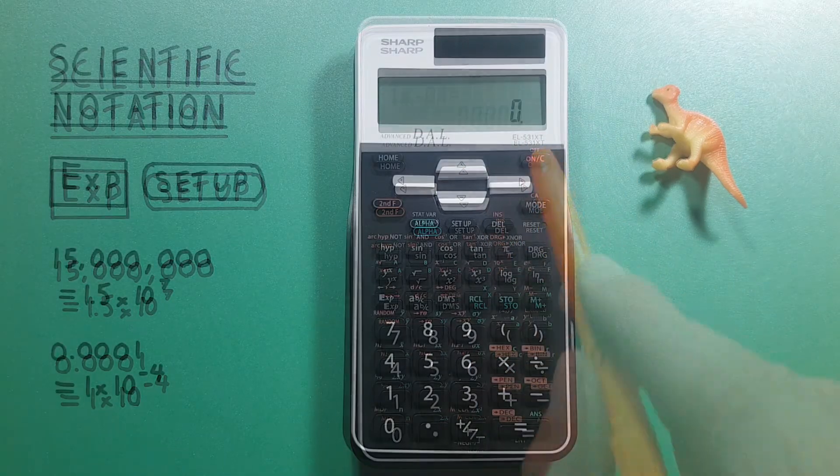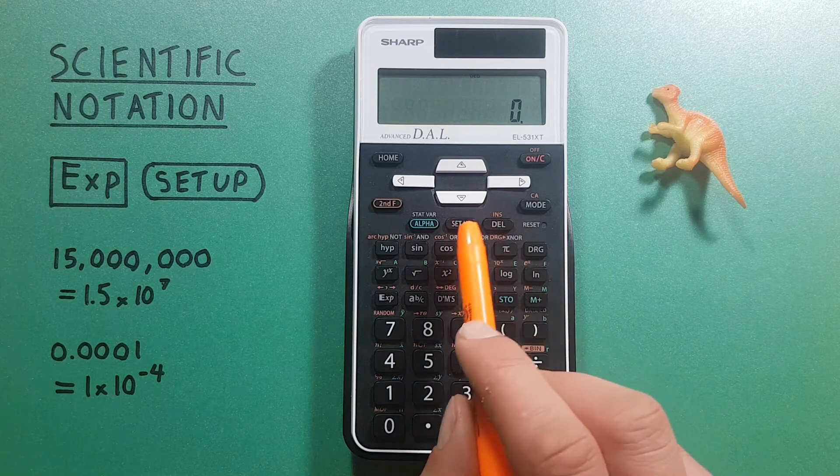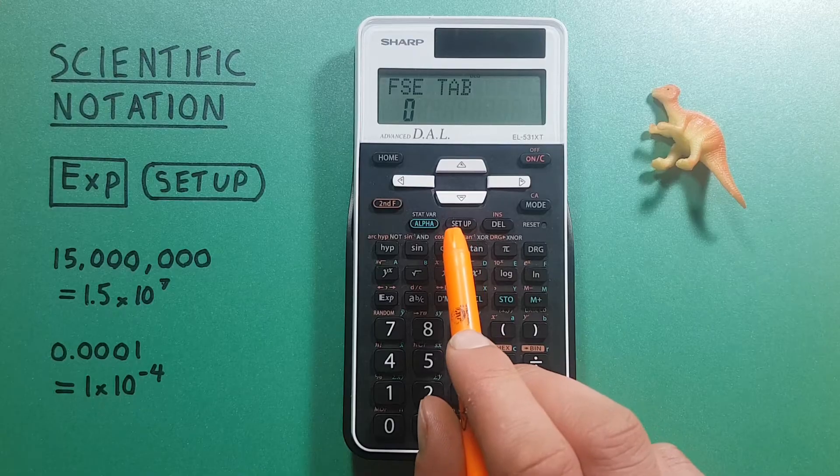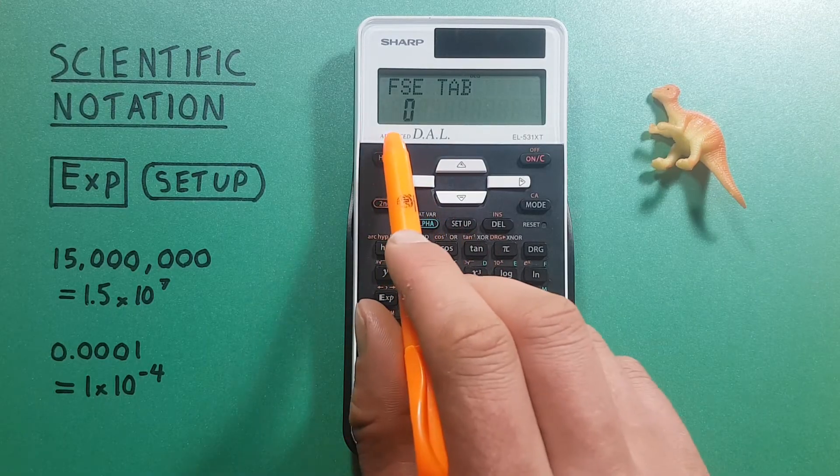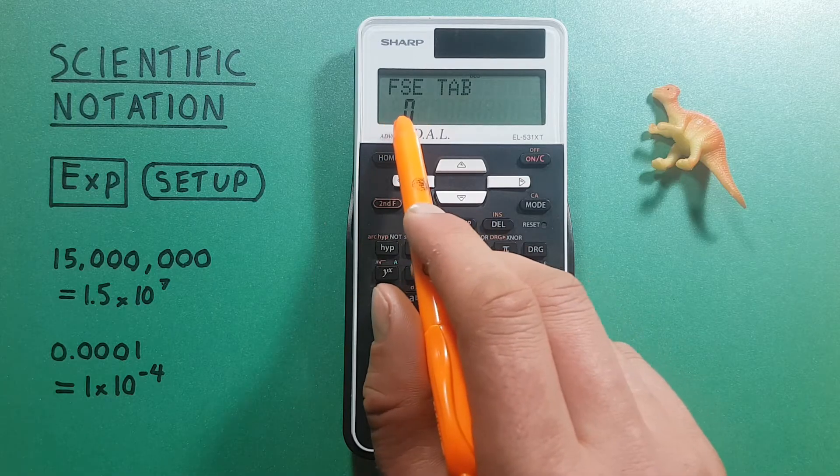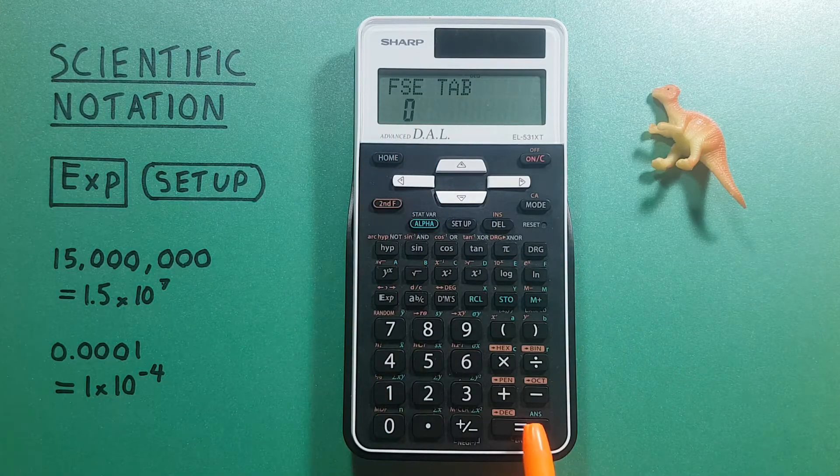Alright, we can also use the menu in the setup menu to convert to scientific notation. Press setup once and it brings us to this menu FSE and tab. We want to use the FSE so either press enter or zero.